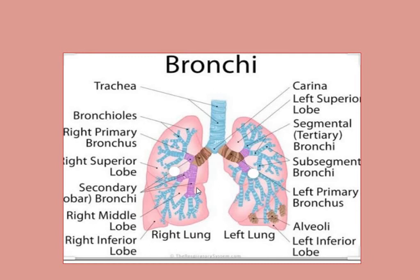The right lung has three lobes, while the left lung has two lobes. If you look at the diagram, the left lung shows two lines dividing it into sections — these are the lobes. The left lung, shown with one line, is divided into two portions: upper and lower. The right lung is divided into three portions — upper, middle, and lower — because the right primary bronchus divides into three secondary bronchi. The left lung has only upper and lower lobes, so it has two lobes.